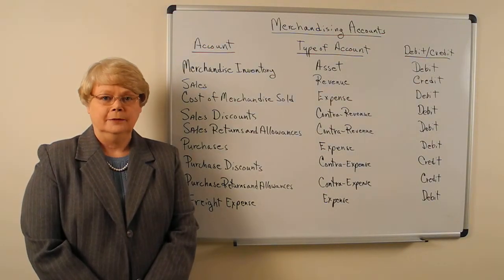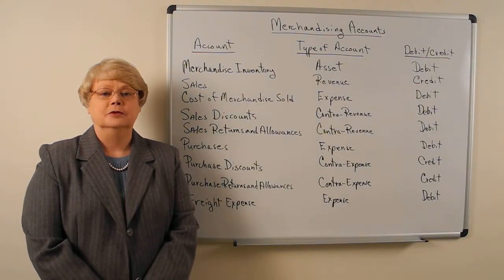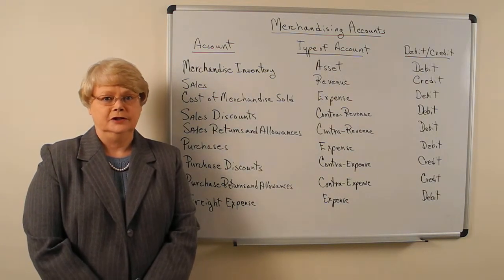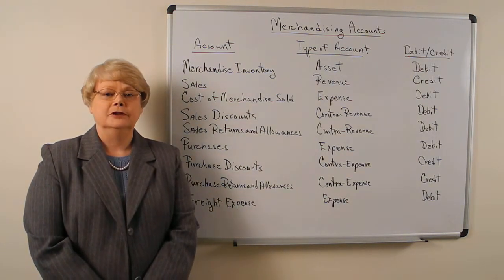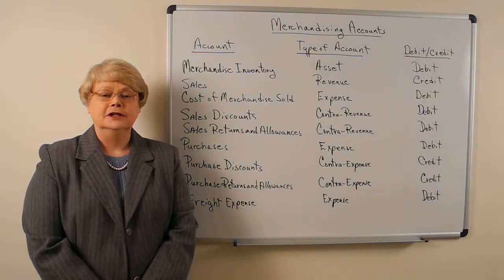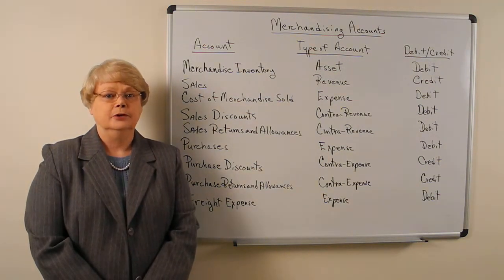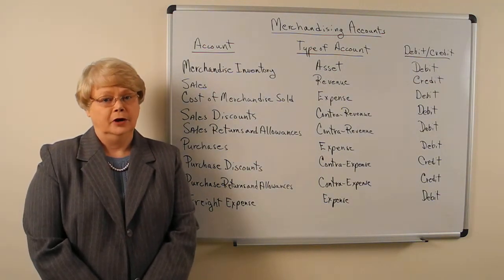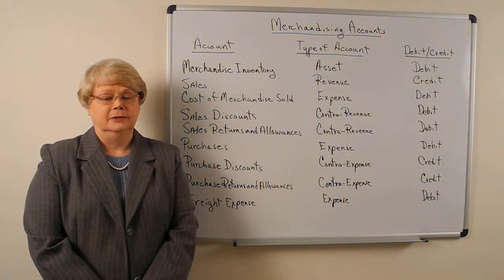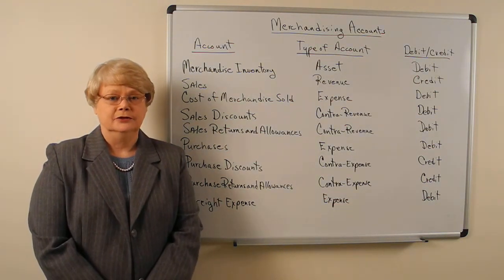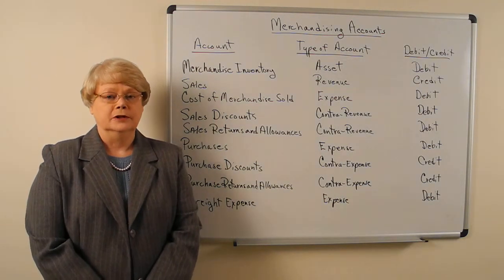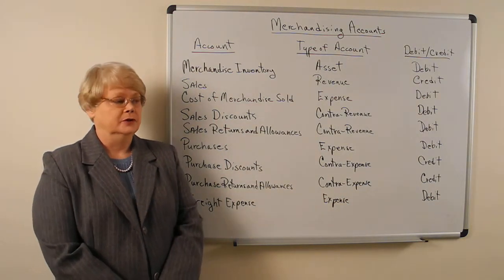In the chapters prior to this one, you have talked about a service organization. However, this chapter introduces merchandising. A merchandising business is one that purchases a product for resale. Therefore, we need to add some accounts to the chart of accounts that we've been using in the past. So I'm going to introduce some new accounts.